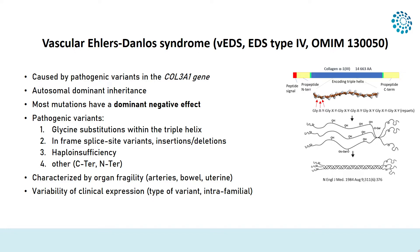The most common variants are the glycine substitutions within the triple helix, in-frame splice variants, and insertions/deletions. More rarely are haploinsufficient variants. It's a disease characterized by organ fragility, mainly arterial and bowel, and of interest today is the uterine fragility during pregnancy. Vascular EDS has quite a variable clinical expression, mainly intrafamilial and by similar variant also.